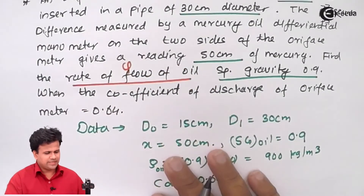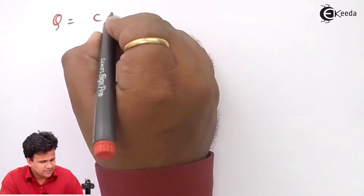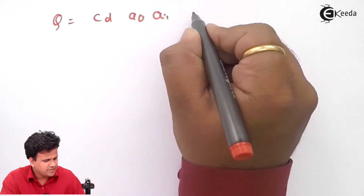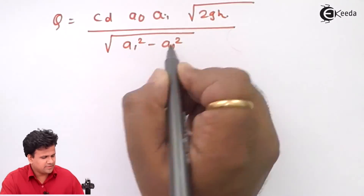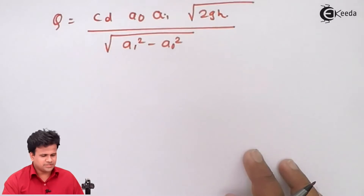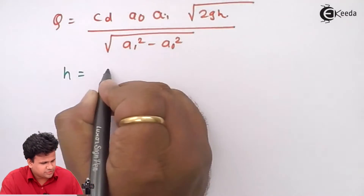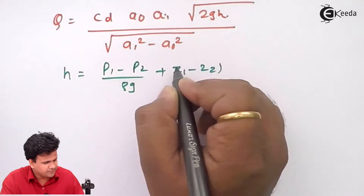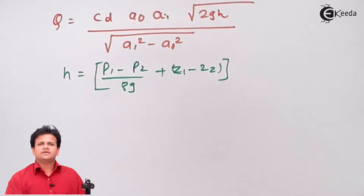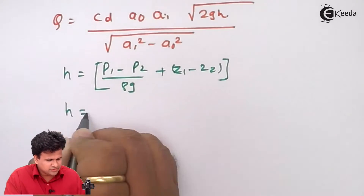To find Q, we use the formula for orifice meter: Q equals CD into A0 into A1 into square root of 2gH, divided by the square root of A1 squared minus A0 squared. Now H equals (P1 minus P2) upon ρg plus Z1 minus Z2. But in this problem they have not specified the pressure difference — they have specified the difference in level of mercury, so we will use a different formula for H.